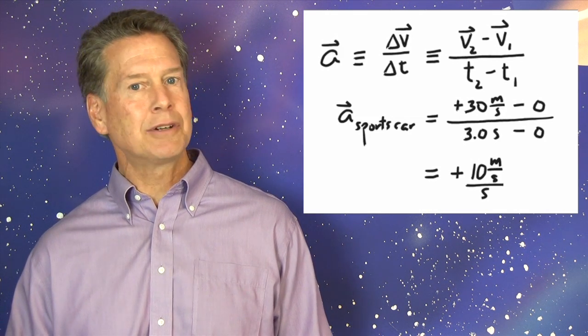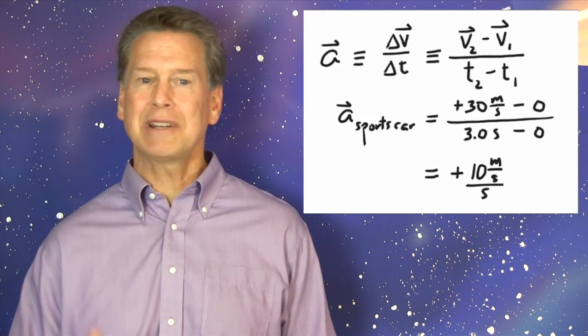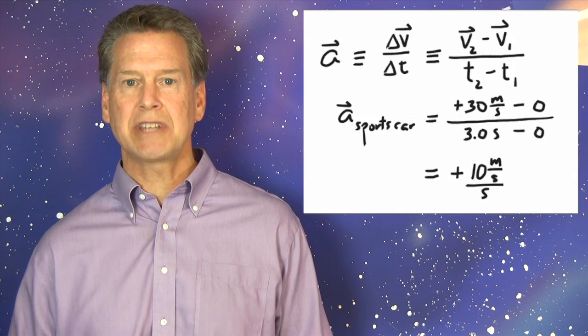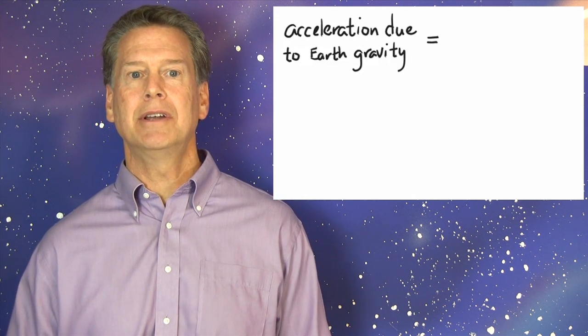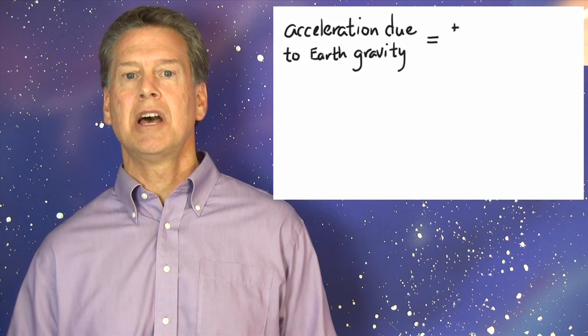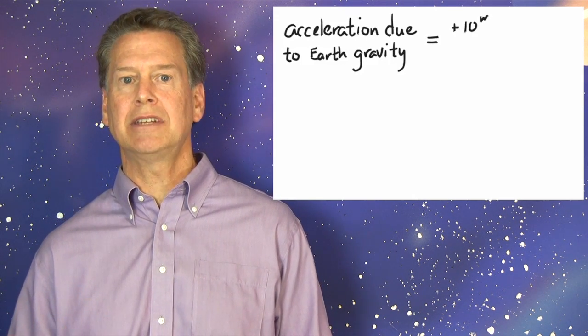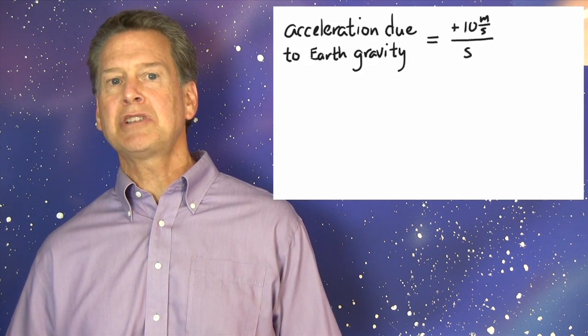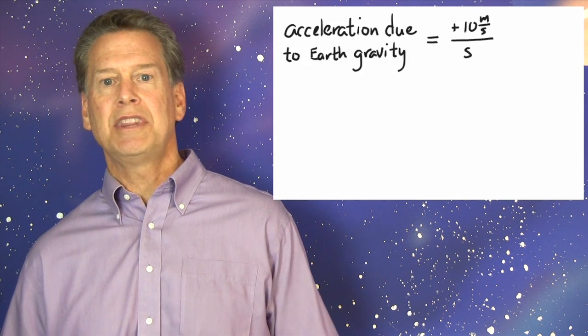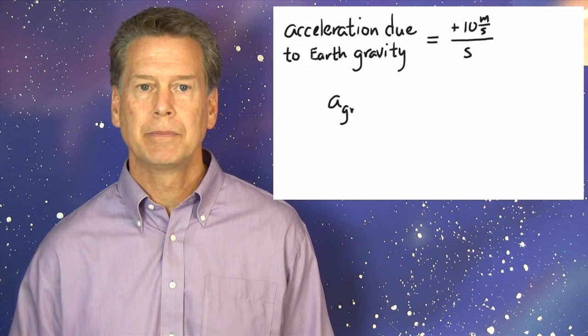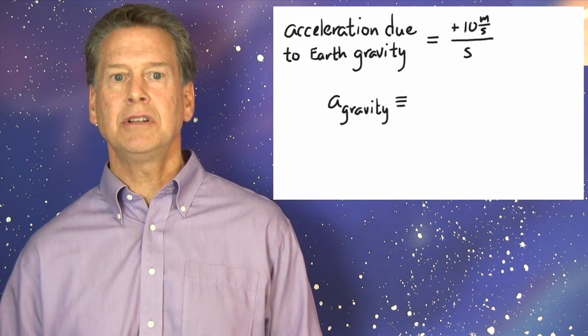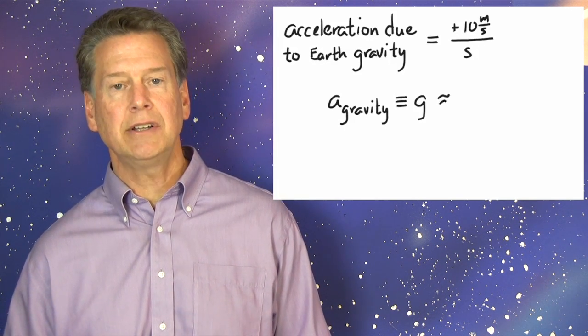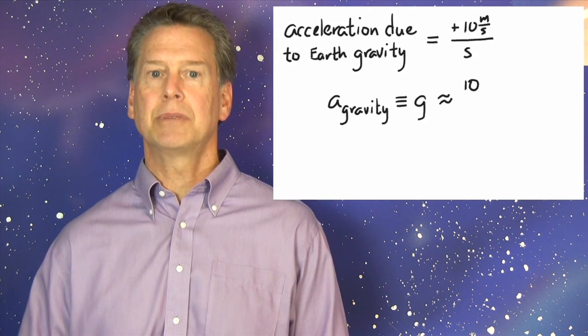That acceleration might look familiar to you. It is a very special number. 10 meters per second per second is the acceleration due to gravity near Earth's surface. As anything falls to the ground, its velocity changes by plus 10 meters per second each second. This acceleration is so special and so useful that we give it a special symbol. Little a sub gravity is defined to be the single letter little g, and it equals very nearly 10 meters per second per second.